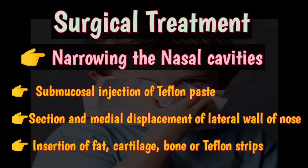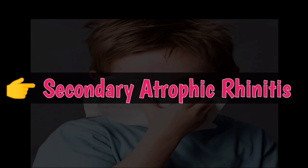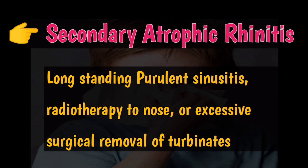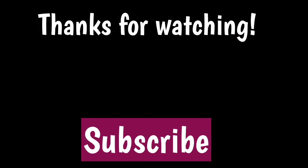Secondary atrophic rhinitis may be due to any underlying infection such as syphilis, lupus, leprosy, and rhinoscleroma, which may lead to atrophic changes. Atrophic changes may also occur in long-standing cases of purulent sinusitis, radiotherapy to the nose, or excessive surgical removal of turbinates.